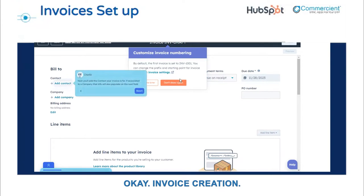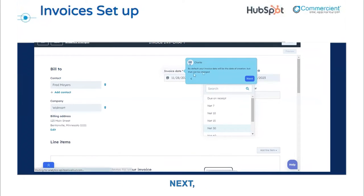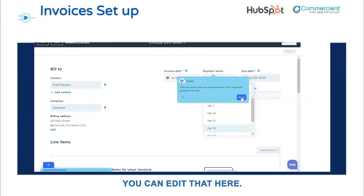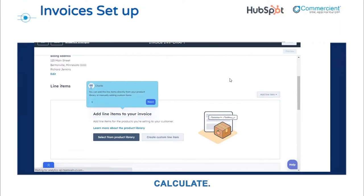Invoice creation: the first step is to add the contact that the invoice is for. If this contact is already associated with the company in your HubSpot, the company should auto-populate in the next step. Next, you'll need to set the invoice terms. By default, the invoice date will be the same day as you're creating the invoice, but you can edit that. You can also set your invoice terms, and once the invoice date and terms are set, the due date will automatically calculate. This is only one way to create invoices — in this example, we're starting from scratch.